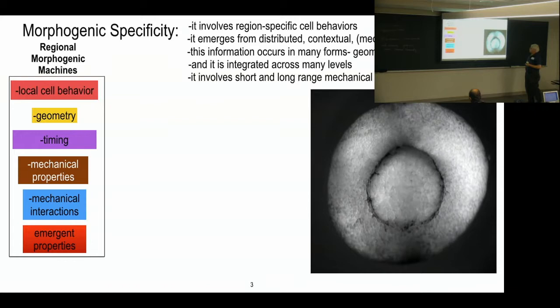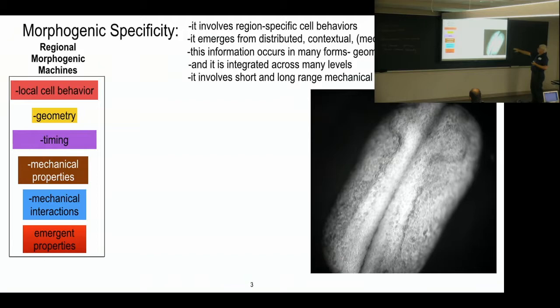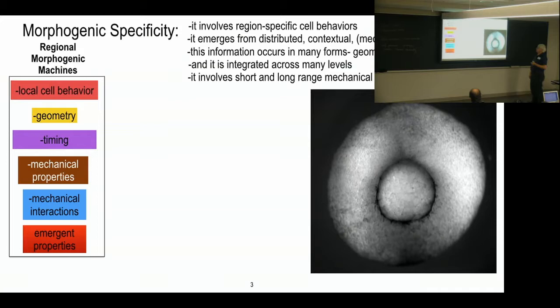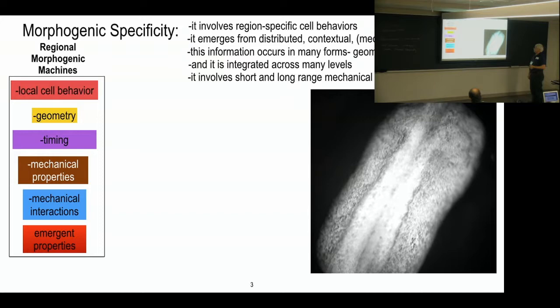This is the problem. So we've been working on this for a number of years. And from our perspective, morphogenic specificity, how do you specify patterns, that mechanical pattern? Well, it involves region specific, a bunch of region specific cell behaviors. And we define those, let's see, where's the laser here? There we go.